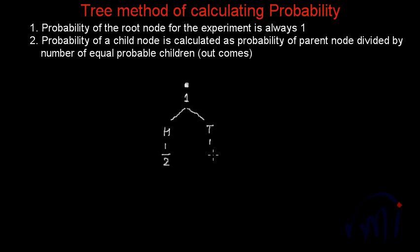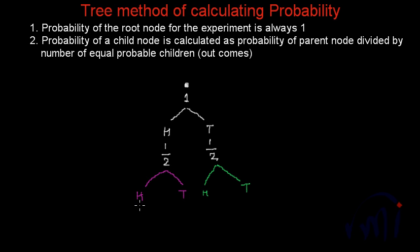So the probability of getting a head is 1 by 2 and the probability of getting a tail is also 1 by 2. If we take this experiment further and again toss the coin, after getting a head we can get a head or tail again. Similarly if we got a tail and toss again, we can get a head or tail. So what will be the probability? This head is the parent node for these two child nodes, and since there are two children, probability of getting head will be half of 1 by 2, that is 1 by 4.